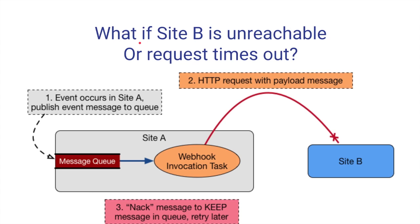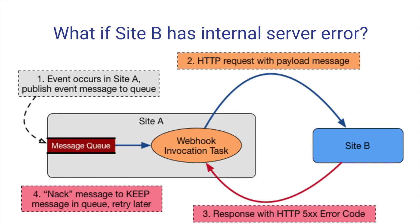What if site B is unreachable or the request times out? In this case, you still have the message queue and the webhook invocation task, but the task cannot reach site B. In order for site A to keep the messages, we would nack that message. Once we nack the message, it will remain in the message queue and we can retry later. The webhook invocation task can go to sleep or wait for a certain timeout period before retrying again. What if we reach site B but internally it has a server error? It will return an HTTP 500 error, and again we nack the message to keep it in the message queue and retry later. The webhook invocation task will do the same — sleep for a certain time and then retry.